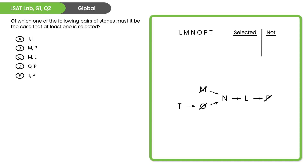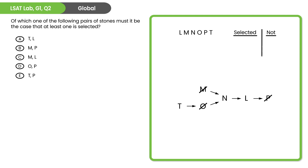Here's question two — go ahead and give this one a try on your own, and when you're ready to check your work, hit play again. This is a global question, meaning it's something we need to answer without new information. It's asking for a pair of stones of which at least one must be selected. So we're looking for a pair where we can identify a relationship in the tree that moves from negative to positive — a negative-to-positive rule requires that at least one of the pair is selected.